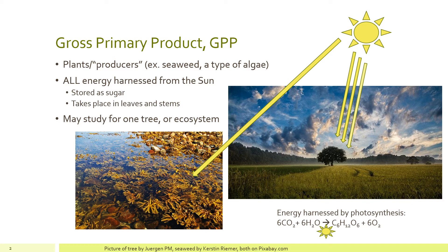The sugar is stored inside the plant, phytoplankton, or algae. In a plant on land, photosynthesis takes place in the leaves or stem — anything that's exposed to the sun, anything that has sunlight to catalyze the reaction.